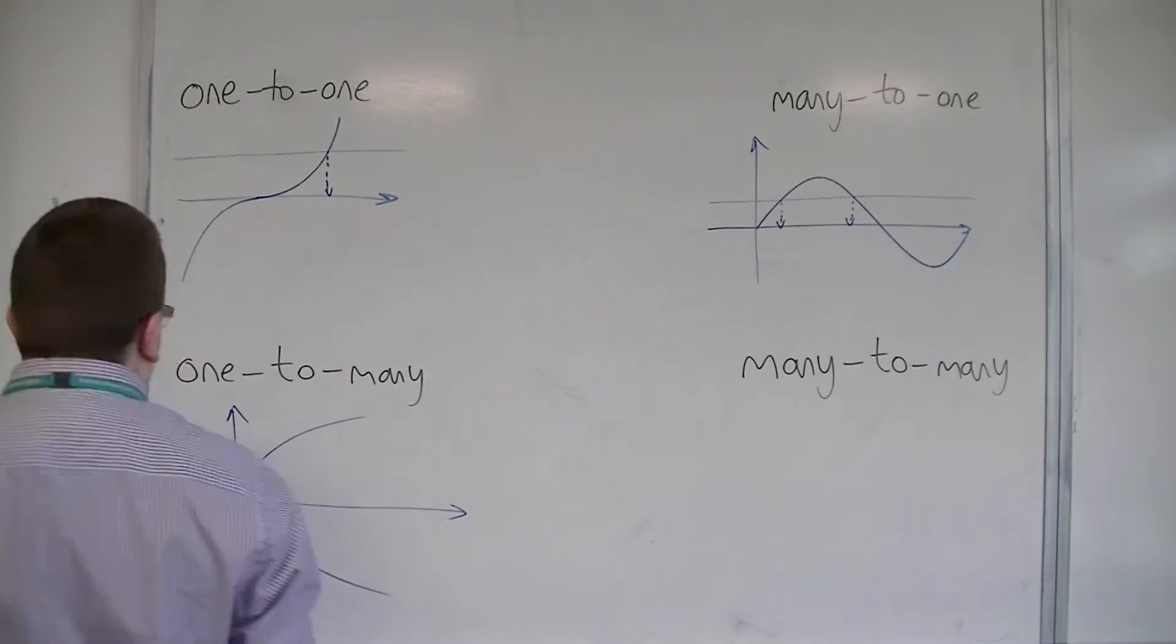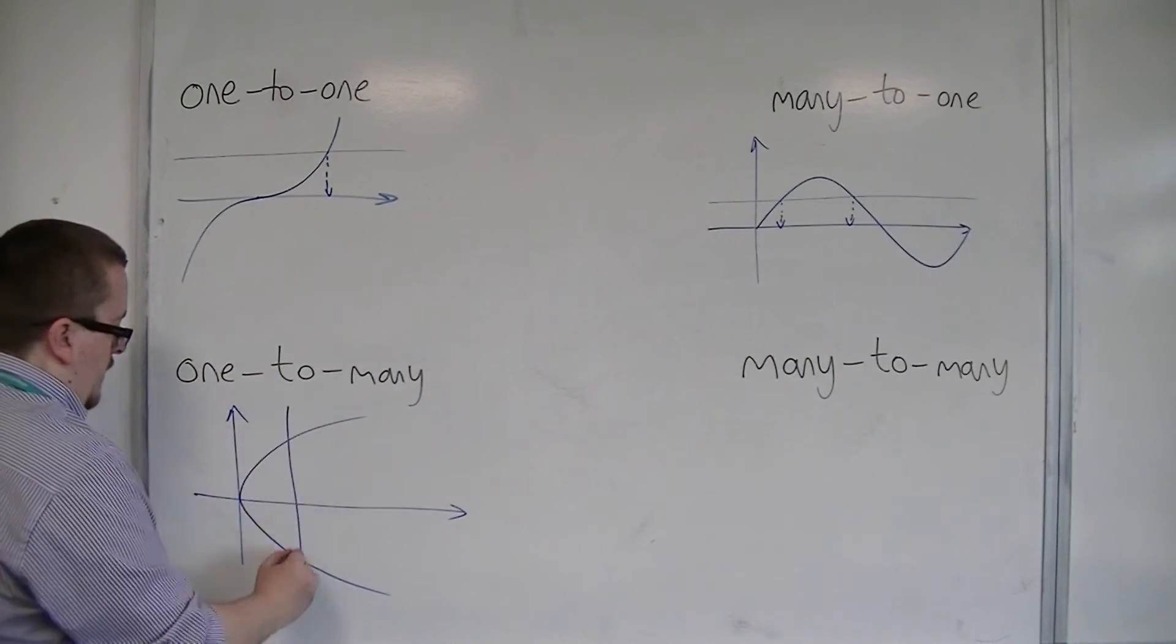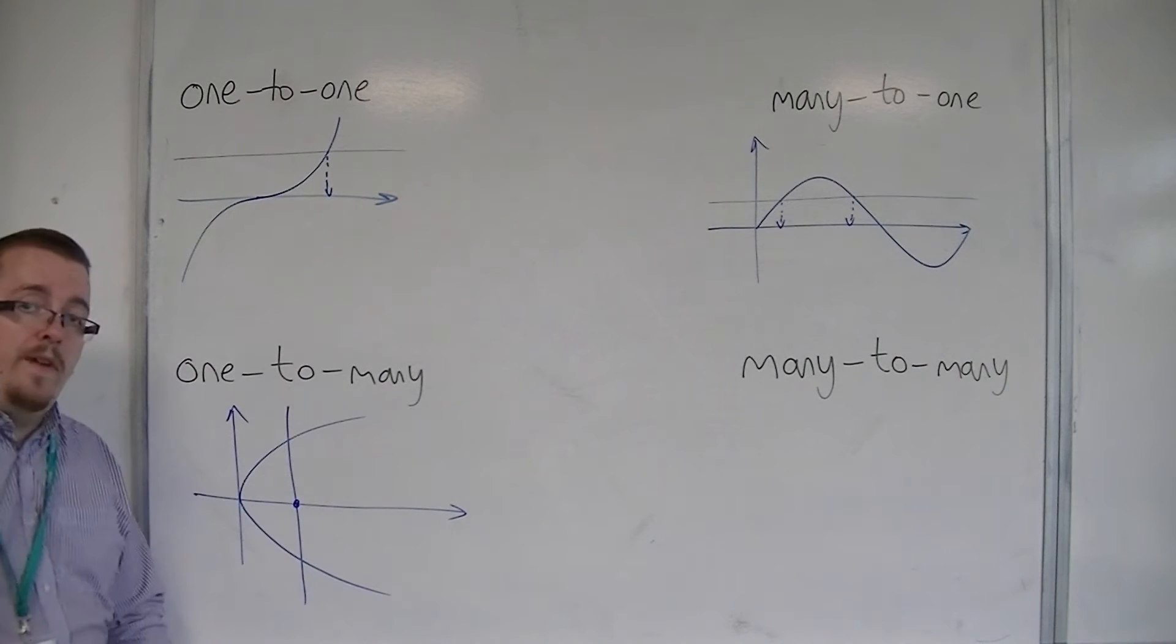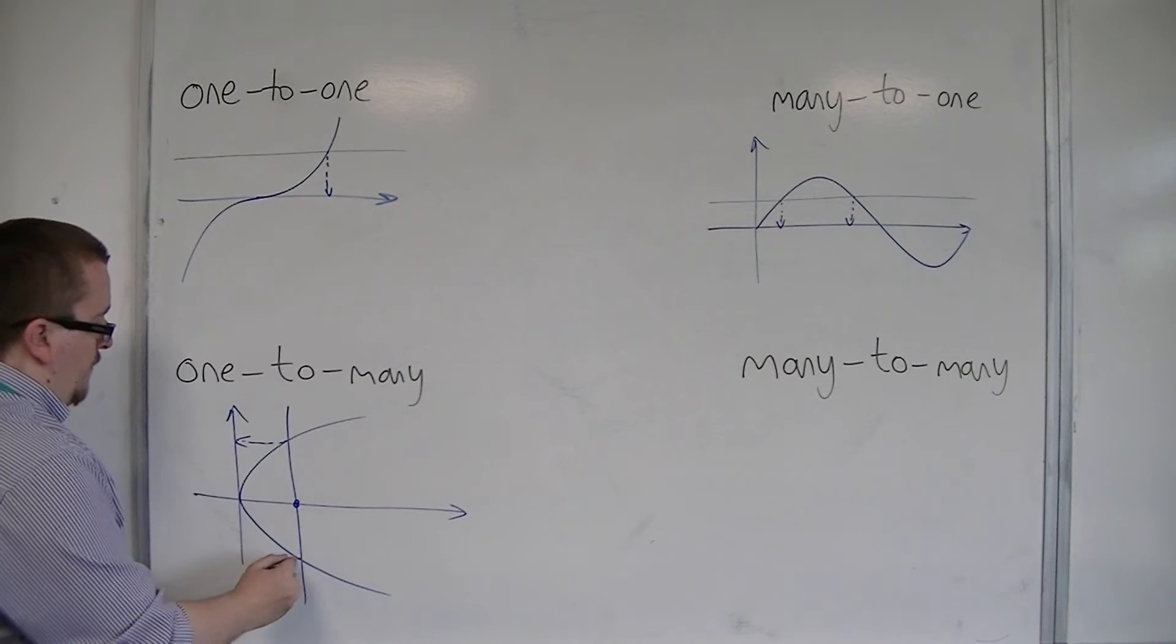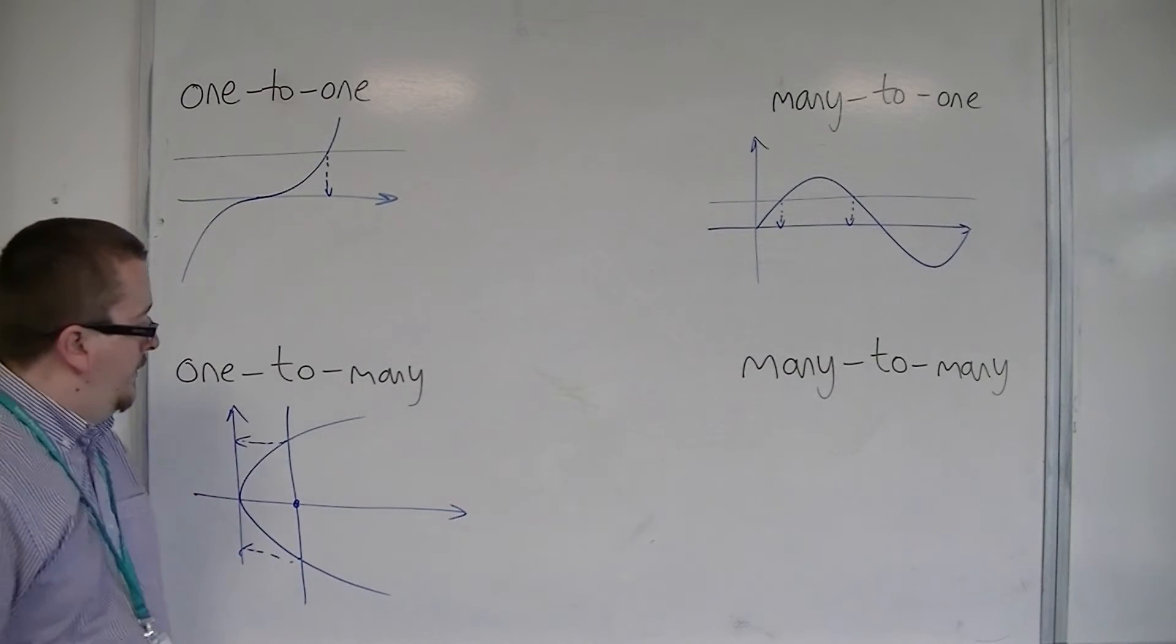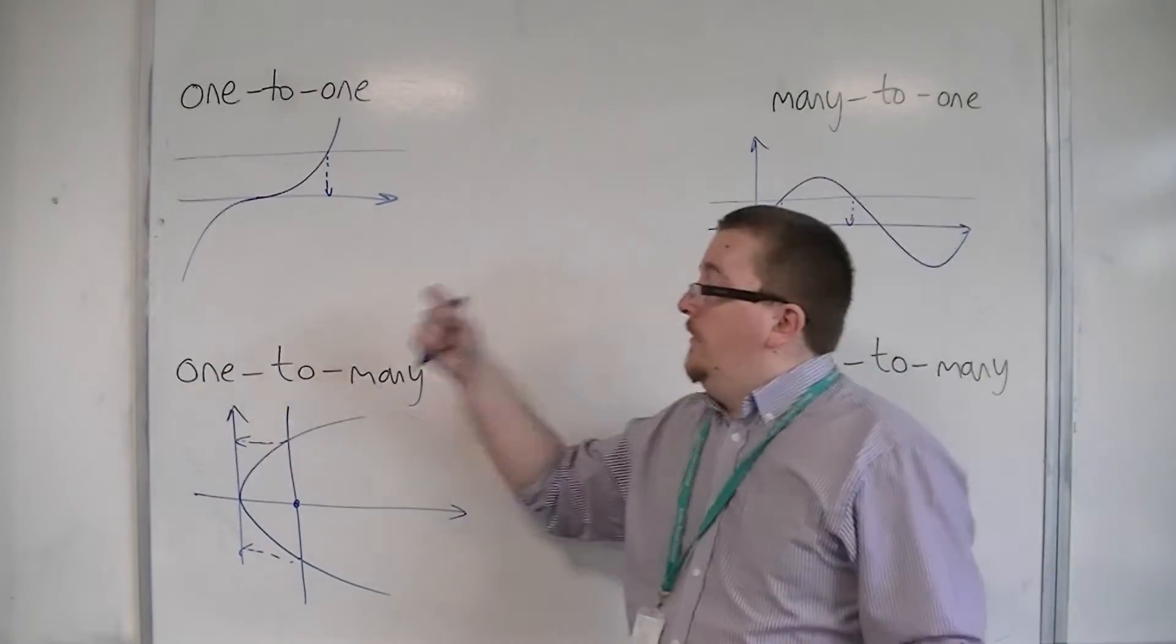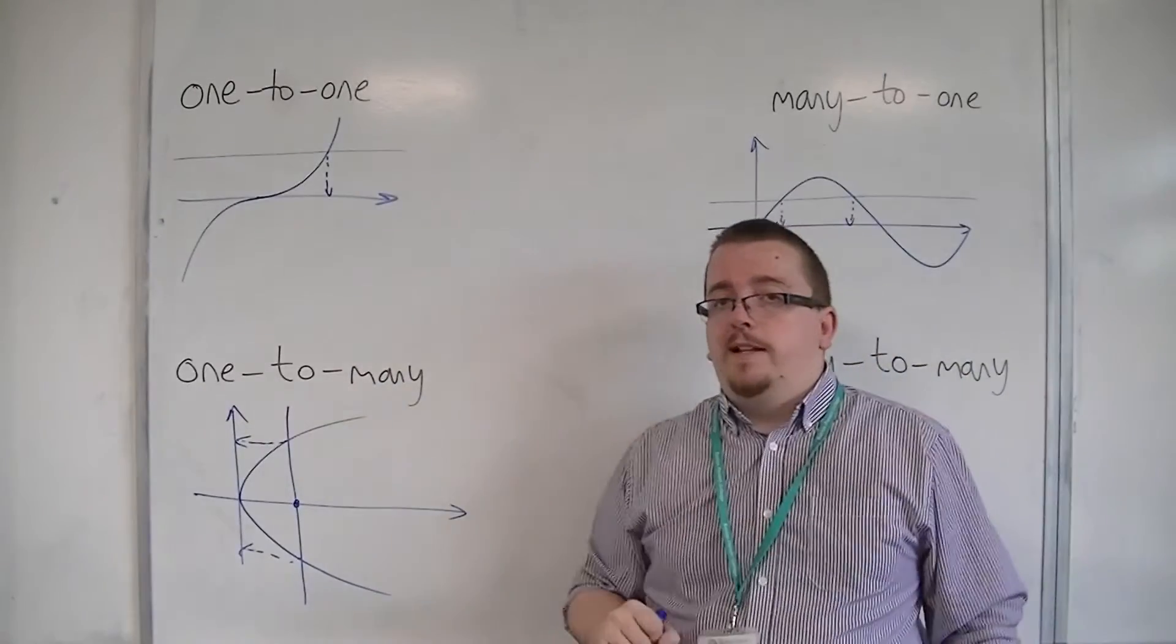If you draw a vertical line this time, you can see that for choosing a value of x, you're getting two values of y in this case. And so one value of x is giving us many values of y.